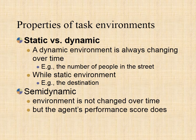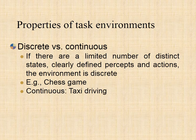The semi-dynamic environment is one that does not change over time, but the agent's performance score does. If there are a limited number of distinct, clearly defined states of the environment, the environment is discrete; otherwise it is continuous. A chess game comes under a discrete environment as there is a finite number of moves that can be performed. A self-driving car is an example of a continuous environment.